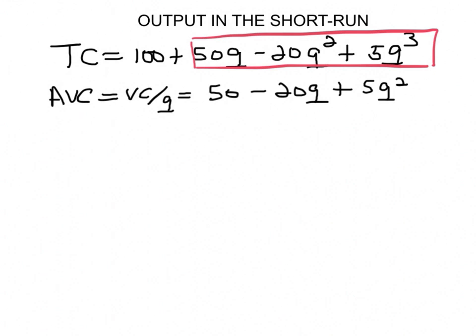And to find the lowest point of that equation, we take the derivative of that equation with respect to output, which is going to be minus 20 plus 10q, and we make that equal to 0. And if we do that, we find that the value of q is going to be equal to 2.